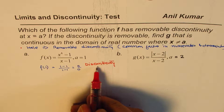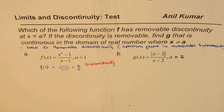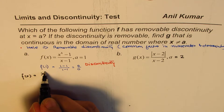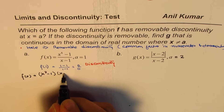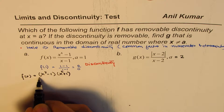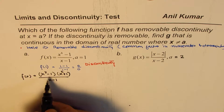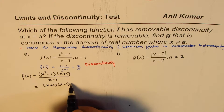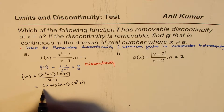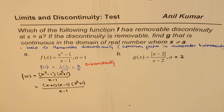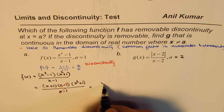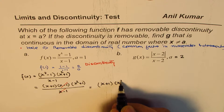Now, whether it is removable or not, we can find that after factoring. We have f of x equals x to the power of 4 minus 1, which can be factored as x squared minus 1 times x squared plus 1, divided by x minus 1. Then x squared minus 1 factors further as x plus 1 times x minus 1, times x squared plus 1, divided by x minus 1. The x minus 1 terms cancel, and we are left with x plus 1 times x squared plus 1.